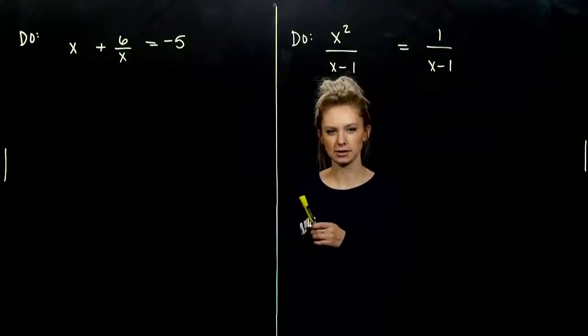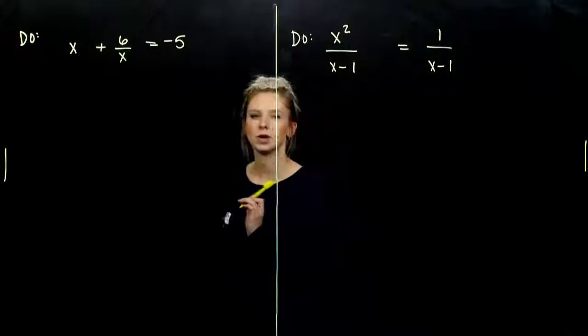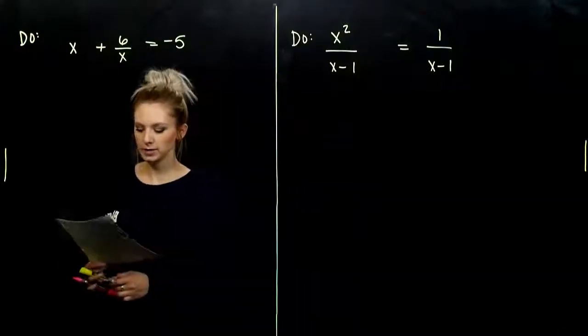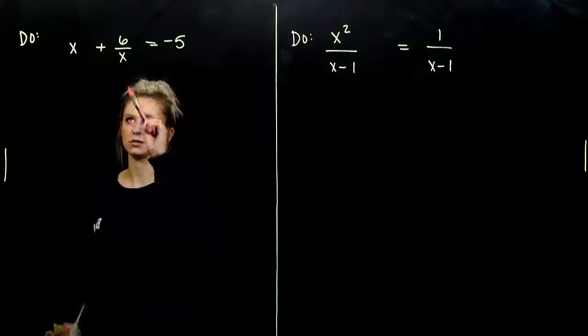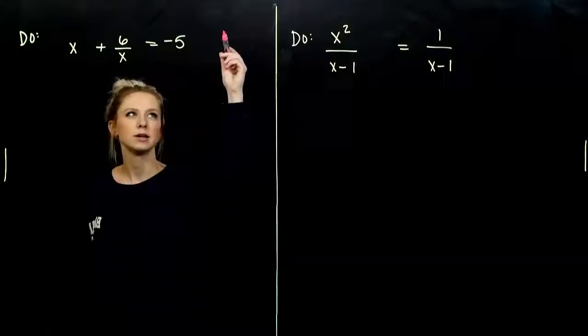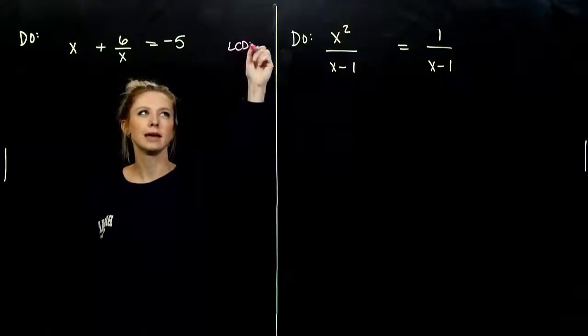I need to clear out all of the denominators. In this case, I only have one. So, what is my LCD between these three fractions? The LCD is x.